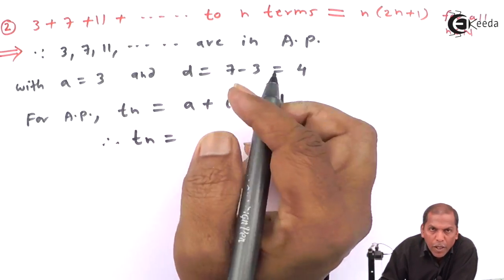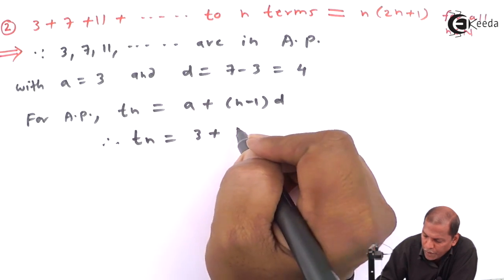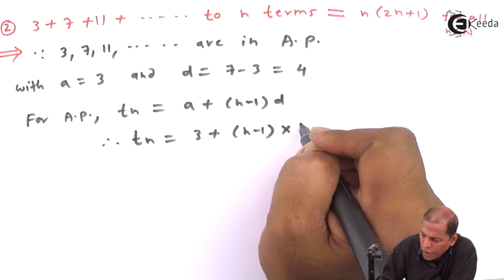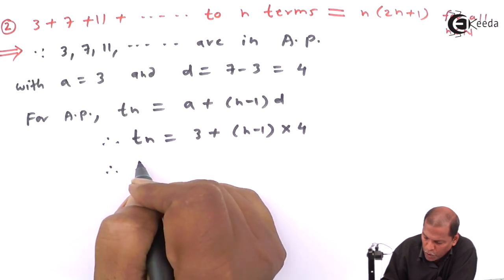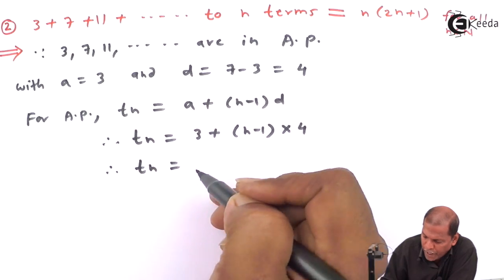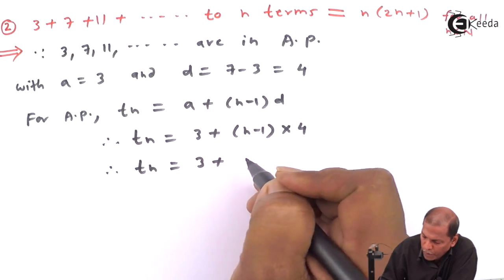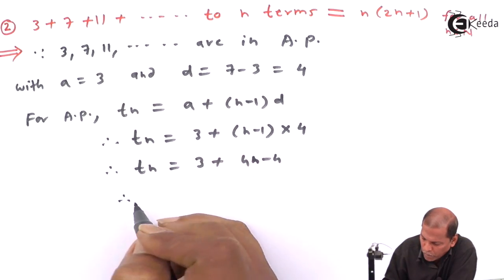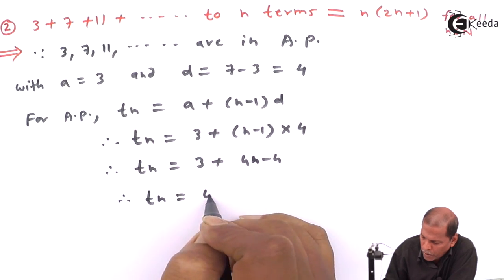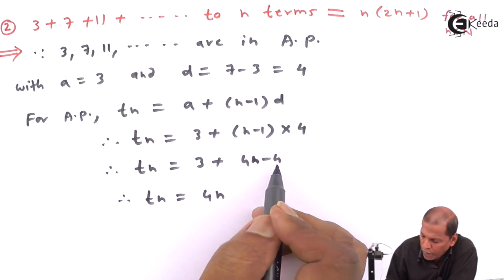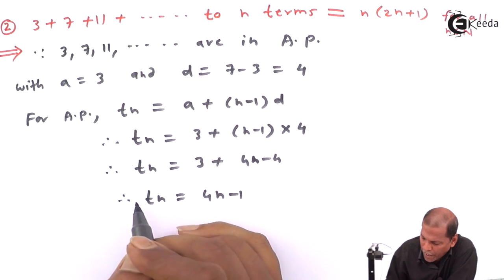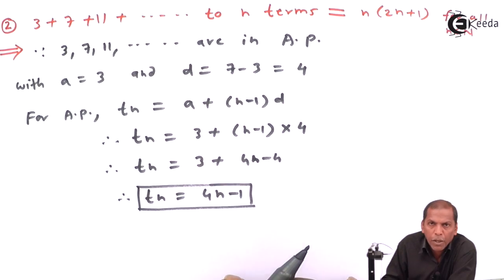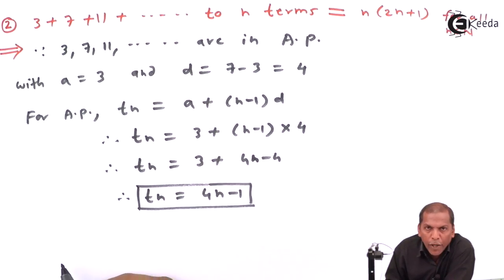Therefore, Tn is equal to a plus (n minus 1) into d. We substitute d equal to 4, and on further simplifying, we get Tn equal to 3 plus 4n minus 4. Therefore, Tn is equal to 4n minus 1. So in this way, we get the last term as 4n minus 1.